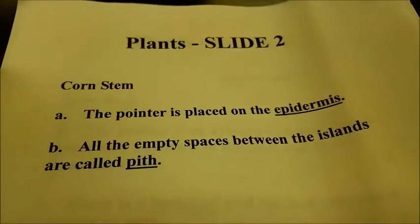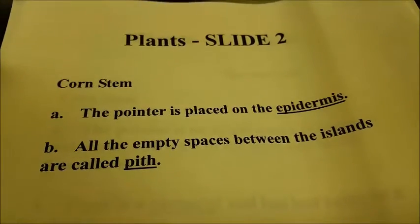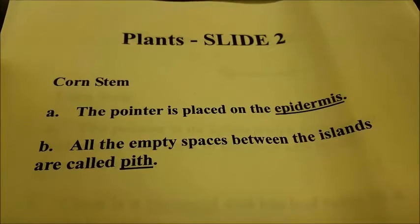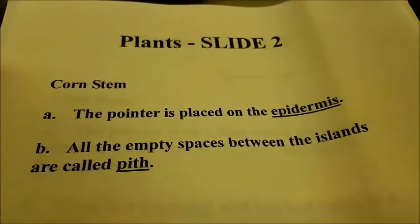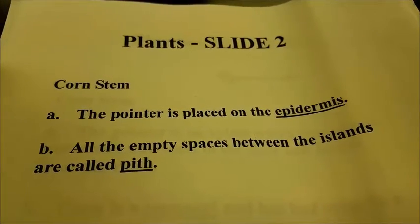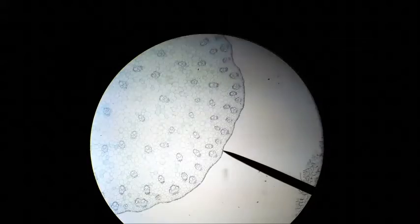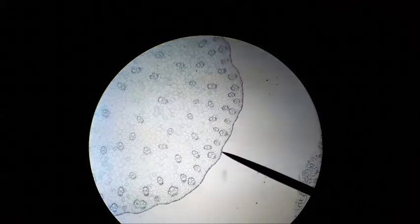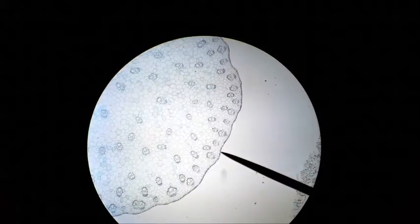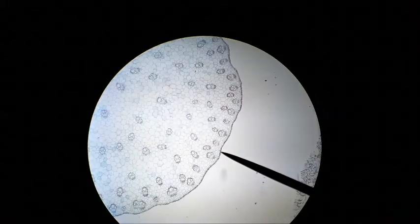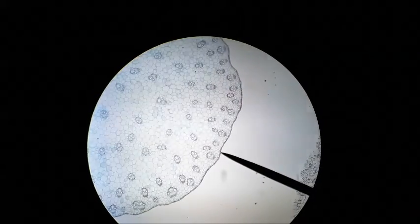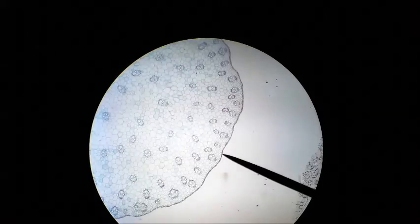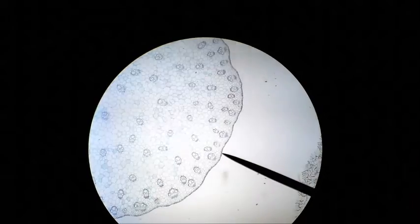In this picture of the corn stem, the pointer is placed on the epidermis. All the empty spaces between the islands are called pith. The little islands inside contain xylem and phloem.